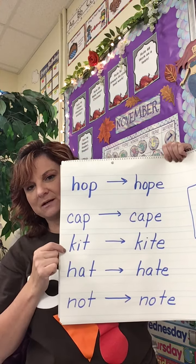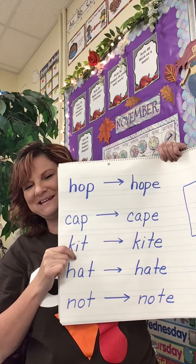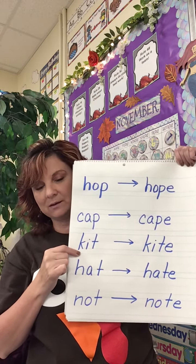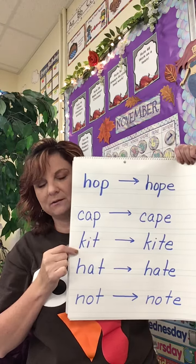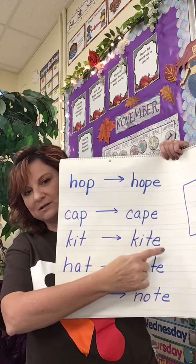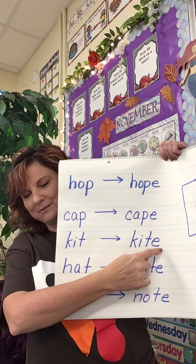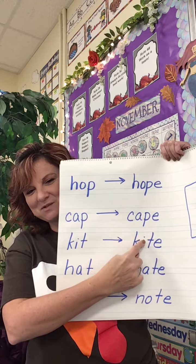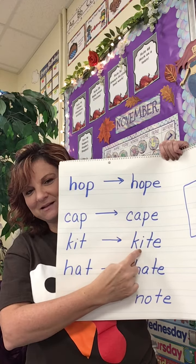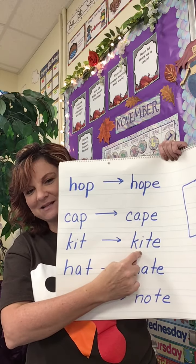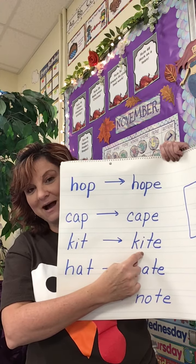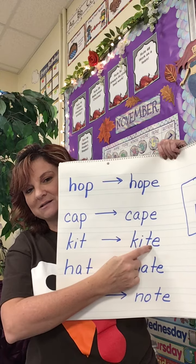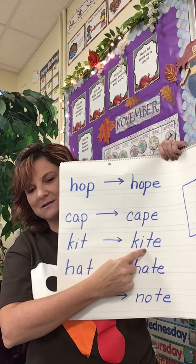So we have K-I-T, kit — like a Lego kit or an art kit. You add that silent E — he jumps over the T and tells the I to say the long sound, 'I'. So we have K-I-T-E, kite.